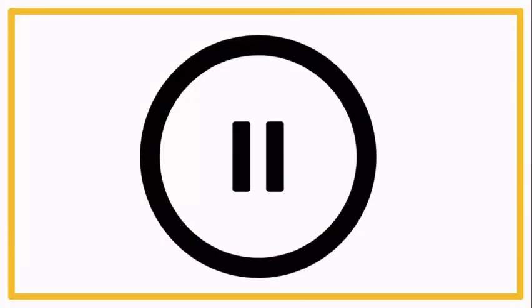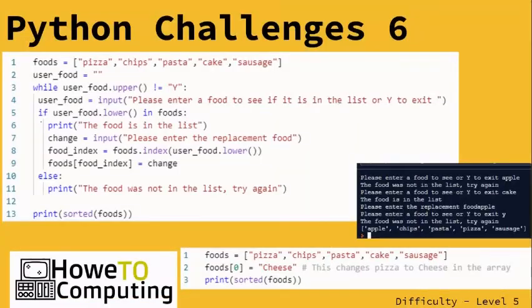So from there, we've got our original code which is up here. You can see this changes the array element zero to cheese — so that would change pizza — and we can run that code. I've got my loop, and to exit I've got a 'y' to exit. I'm going to ask the user to input something.